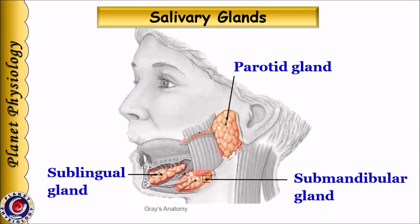Humans have three pairs of major salivary glands that include parotid, submandibular, and sublingual glands. Apart from these, there are many minor salivary glands located in the mucosa of the oral cavity, pharyngeal opening, palate, and buccal pouches.